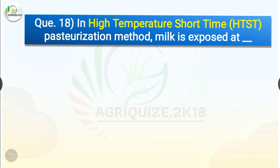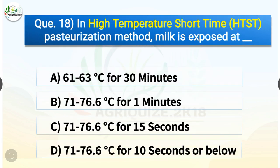Question number 18. In the high temperature short time (HTST) pasteurization method, milk is exposed at dash. The options are 61 to 63°C for 30 minutes, 71 to 76.6°C for 1 minute, 71 to 76.6°C for 15 seconds, or 71 to 76.6°C for 10 seconds or below. The correct answer is option C, 71 to 76.6°C for 15 seconds.